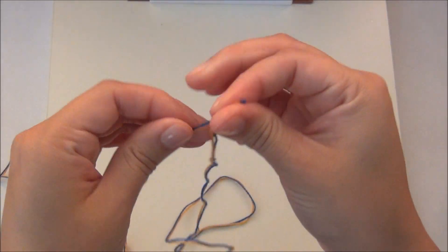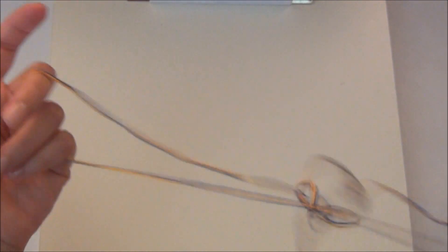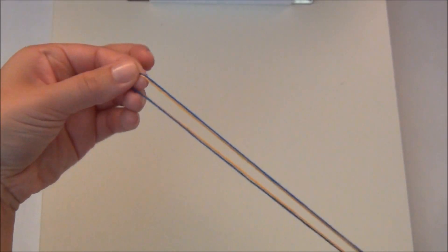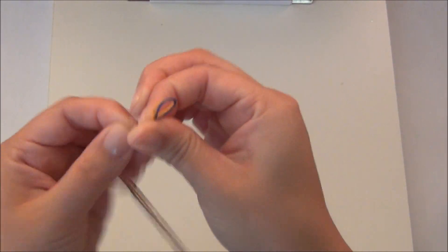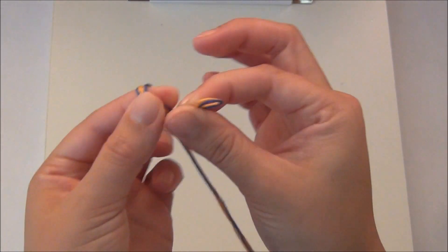Find the ends and run your finger through the middle till you find the very center. Once you've found the center, tie a knot to make a little loop at the end.